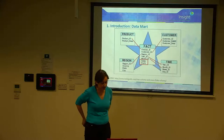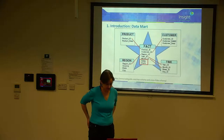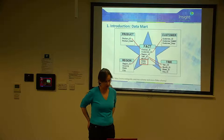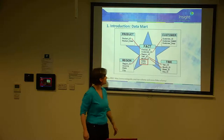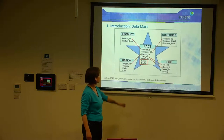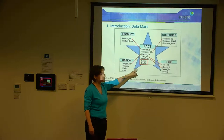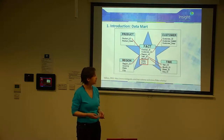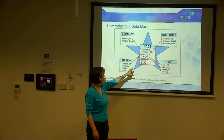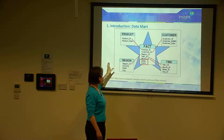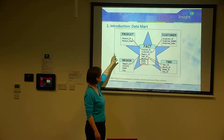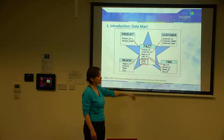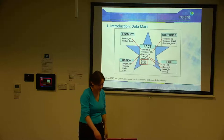A data mart looks something like this. This is a sales data mart generated by the sales business requirement. It holds the measures — sales and profits — which are the things being counted. The fact table contains links to each dimension table: region, product, customer, and time, which provide the context for the data.